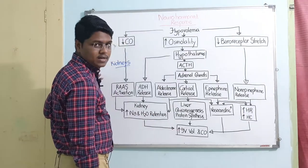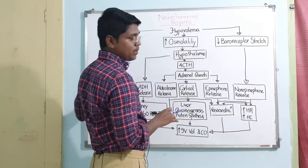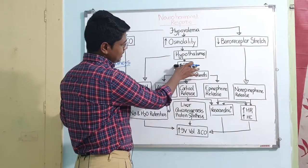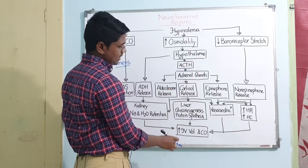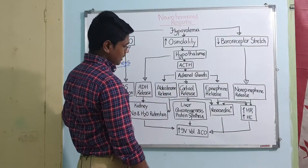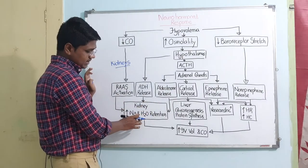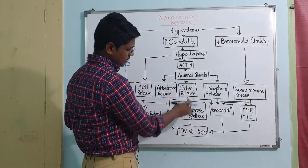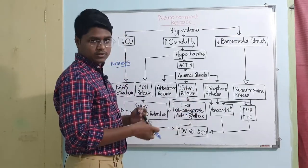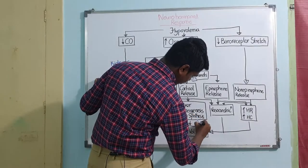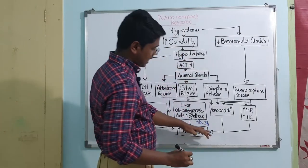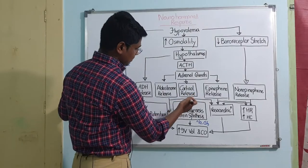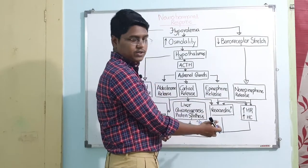Second, when there is hypovolemia or loss of plasma, there will be a decrease in osmolality. When osmolality decreases, the hypothalamus is triggered and releases adrenocorticotropic hormone (ACTH), which acts on the adrenal glands to secrete aldosterone, cortisol, and epinephrine. Aldosterone acts on the kidneys to increase sodium and water retention and also acts as a potent vasoconstrictor. Cortisol acts on the liver to synthesize glucose for energy production and to synthesize proteins, mainly albumin and globulin, which maintain osmolality of blood vessels.